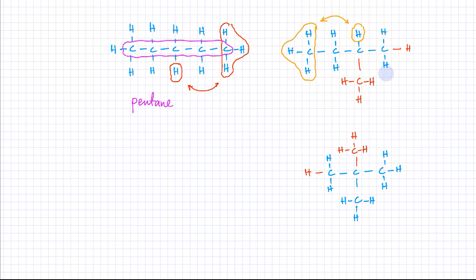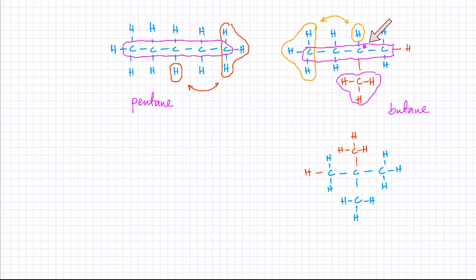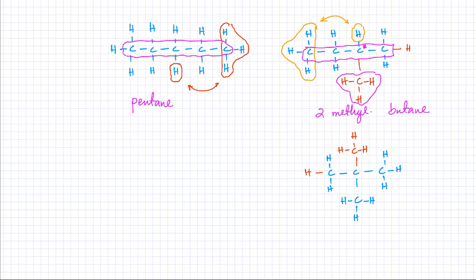Going to the second isomer, it has a total of four carbon atoms in a row, meaning the main chain is butane, not pentane. There is a carbon branch coming out of the second carbon atom. Remember, you come from the side that gives you the smaller number, so it's attached on the second carbon atom. There's a methyl group attached on the second carbon atom, so the name of this molecule is two-methylbutane.